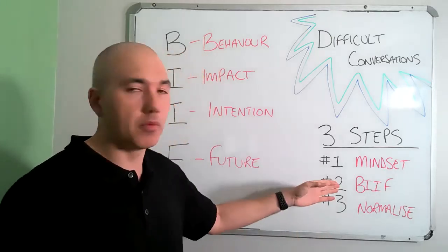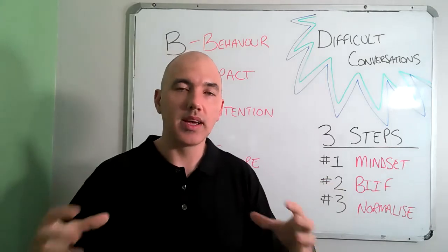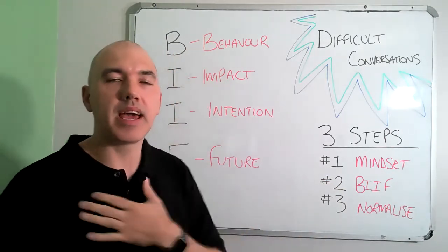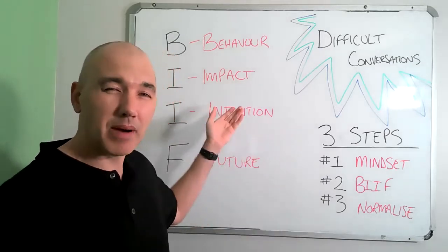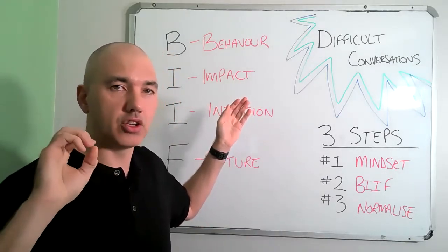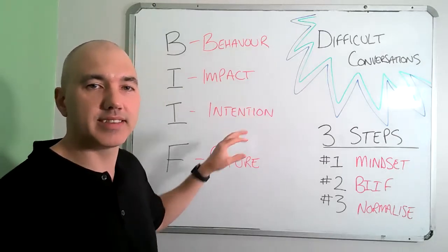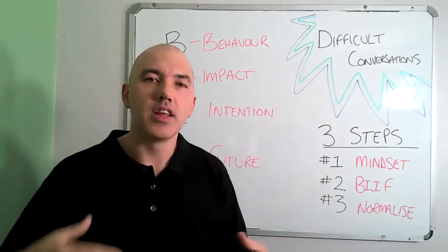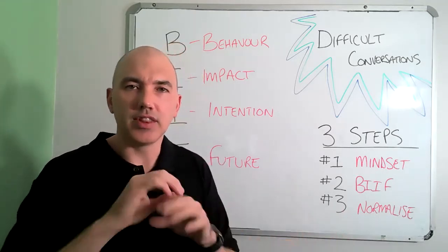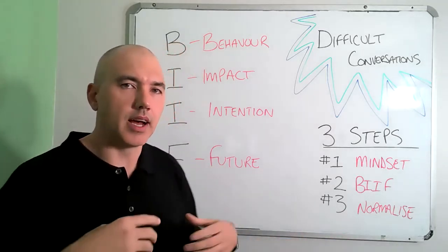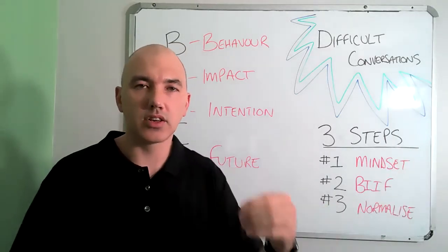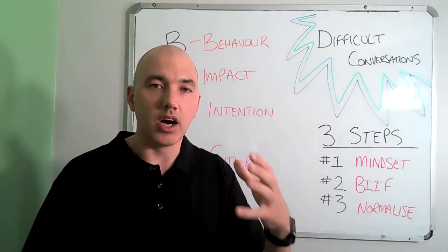The second step is the BIF model. BIF stands for Behavior — what is the behavior I've noticed? What is the Impact that behavior has caused? If you can nail this, you're going to get a great result. And then the Intention — this is a get-out-of-jail-free card. You're asking the person, 'I'm curious, what's your intention? What happened today?' They talk, you be quiet. And then the future state: 'In future, I'd prefer you to do X.'